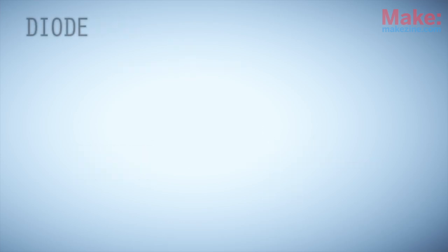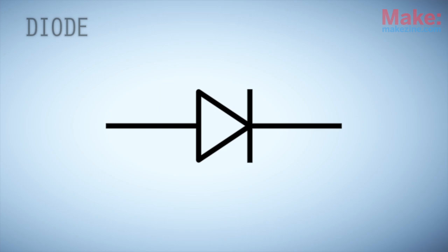The symbol for a diode can be interpreted as an arrow pointing towards the component's negative, or cathode lead. I like to think of it as an arrow bumping into a wall. Electrons can move from the negative lead to the positive lead, but they're prevented from moving in reverse.